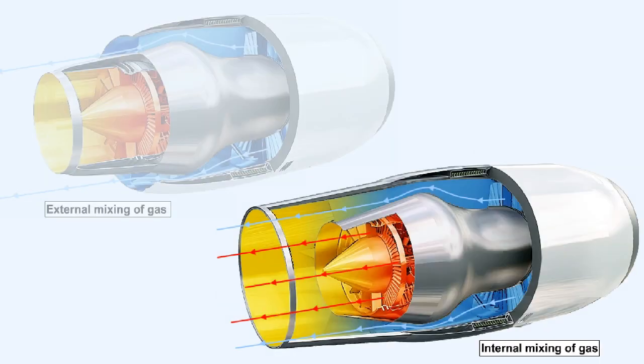Greater efficiency can however be obtained by fitting an integrated exhaust nozzle, which is depicted in the lower illustration. Within this type of unit, the two gas flows are partially mixed together before their ejection into the atmosphere.